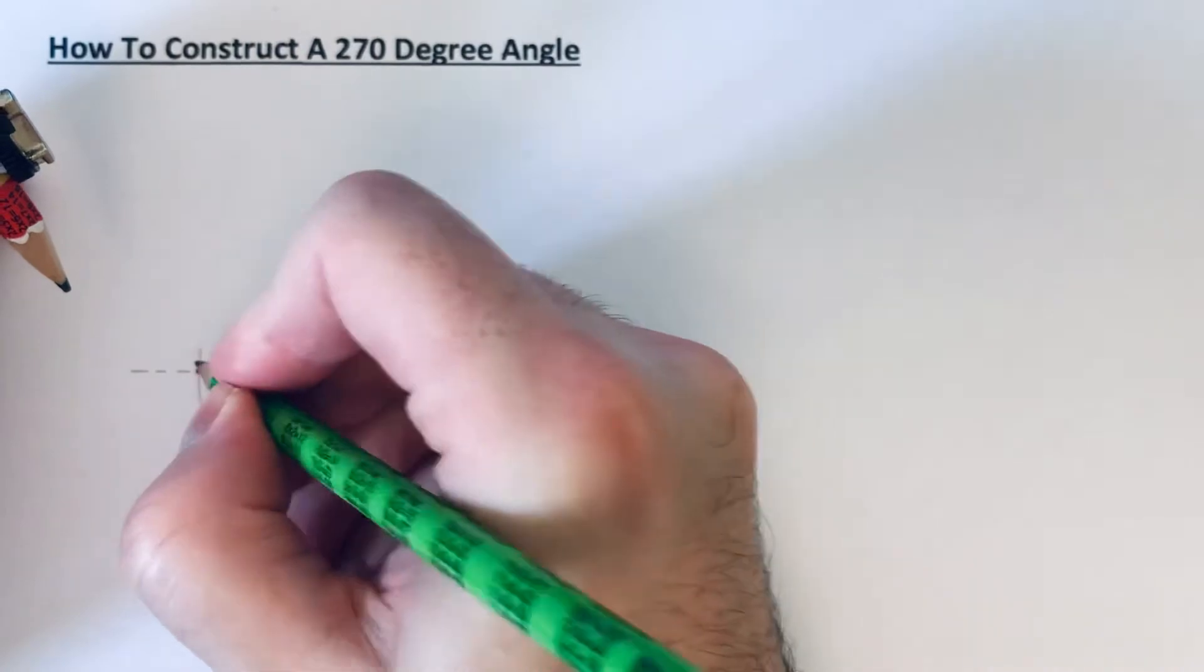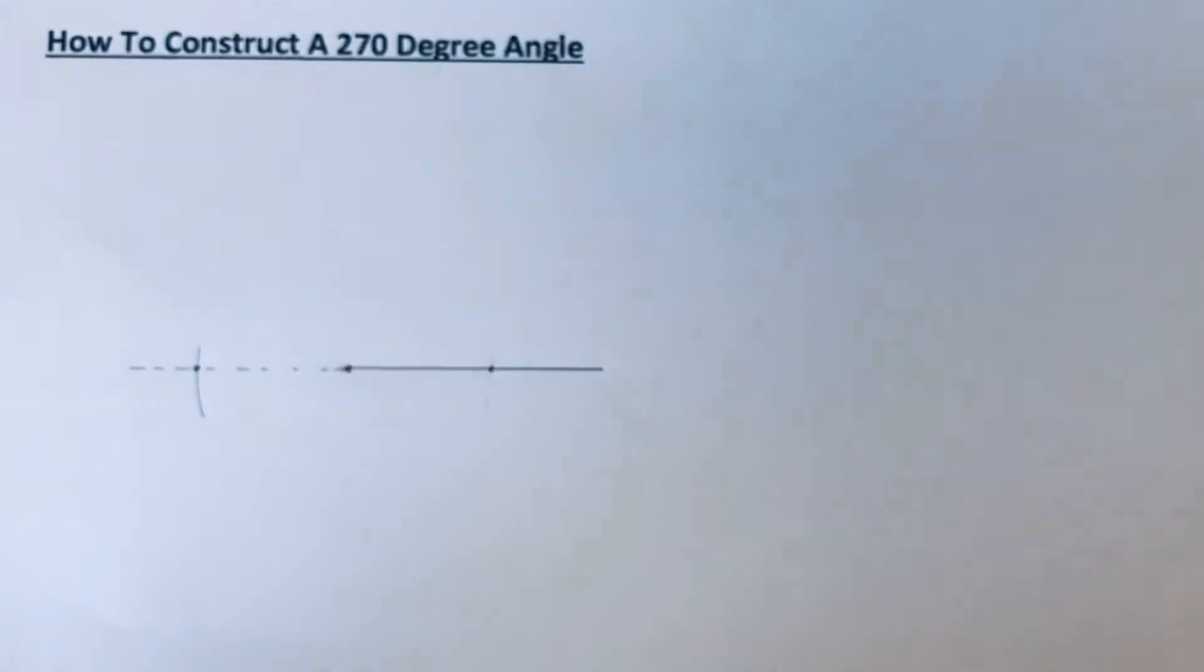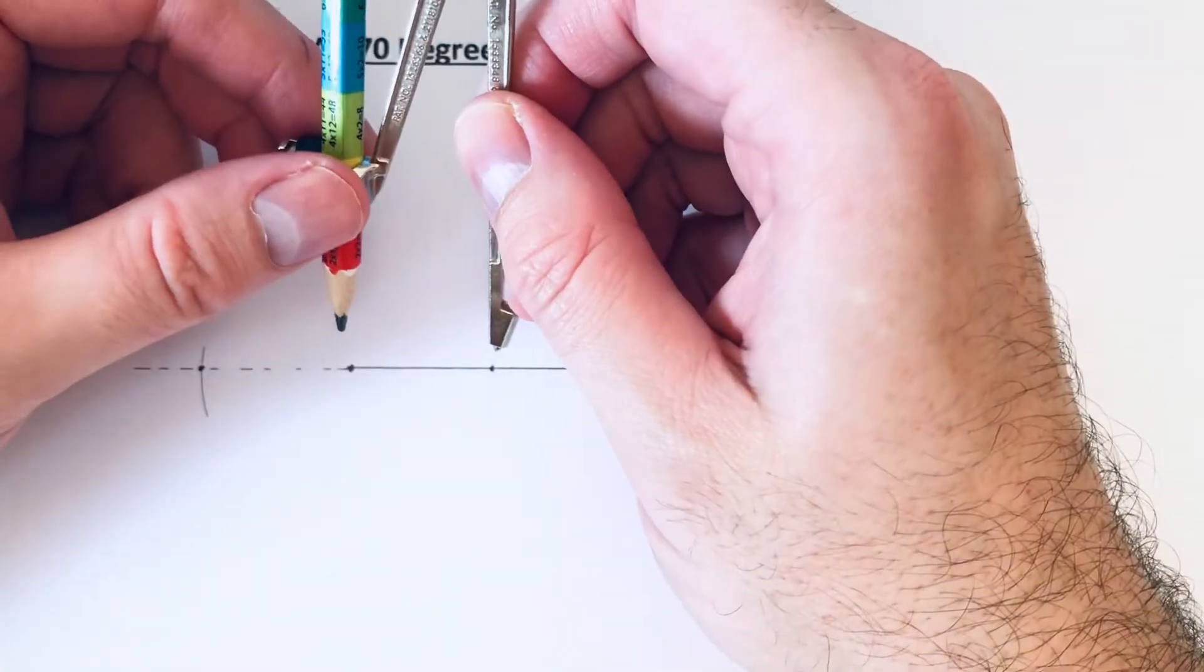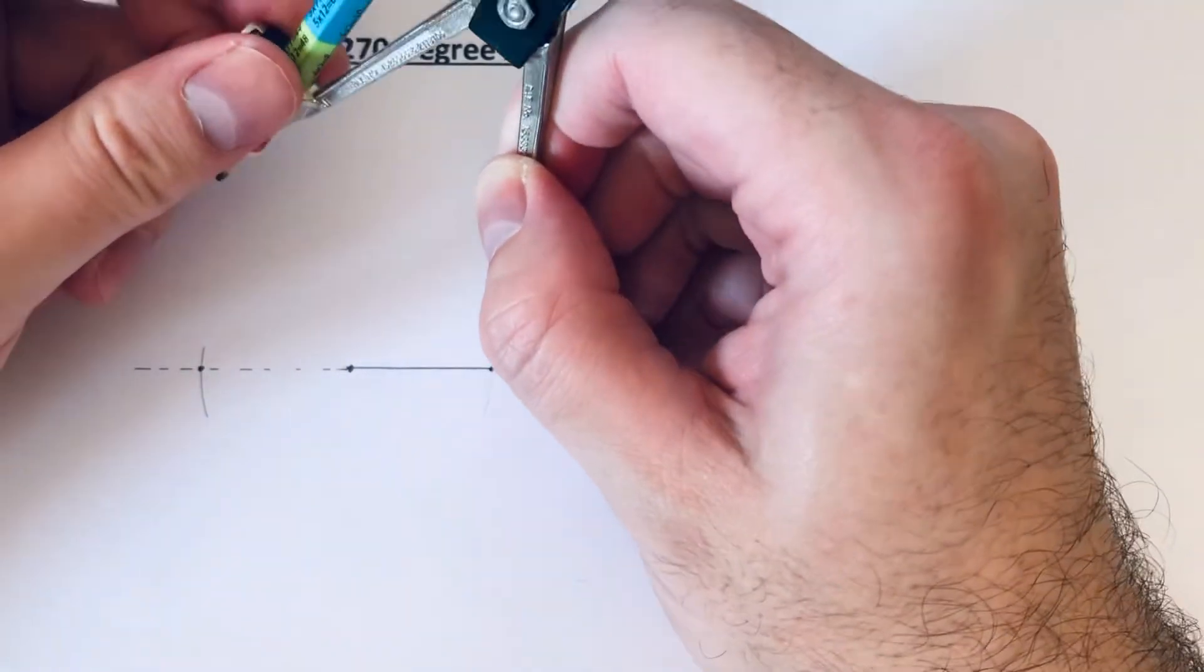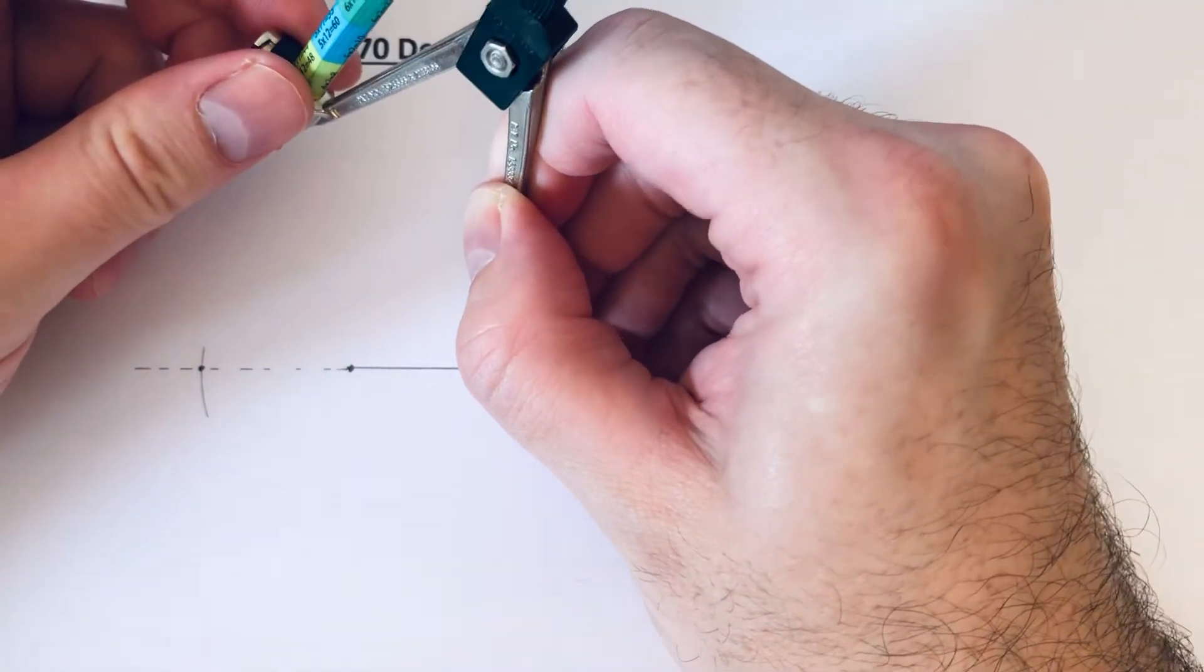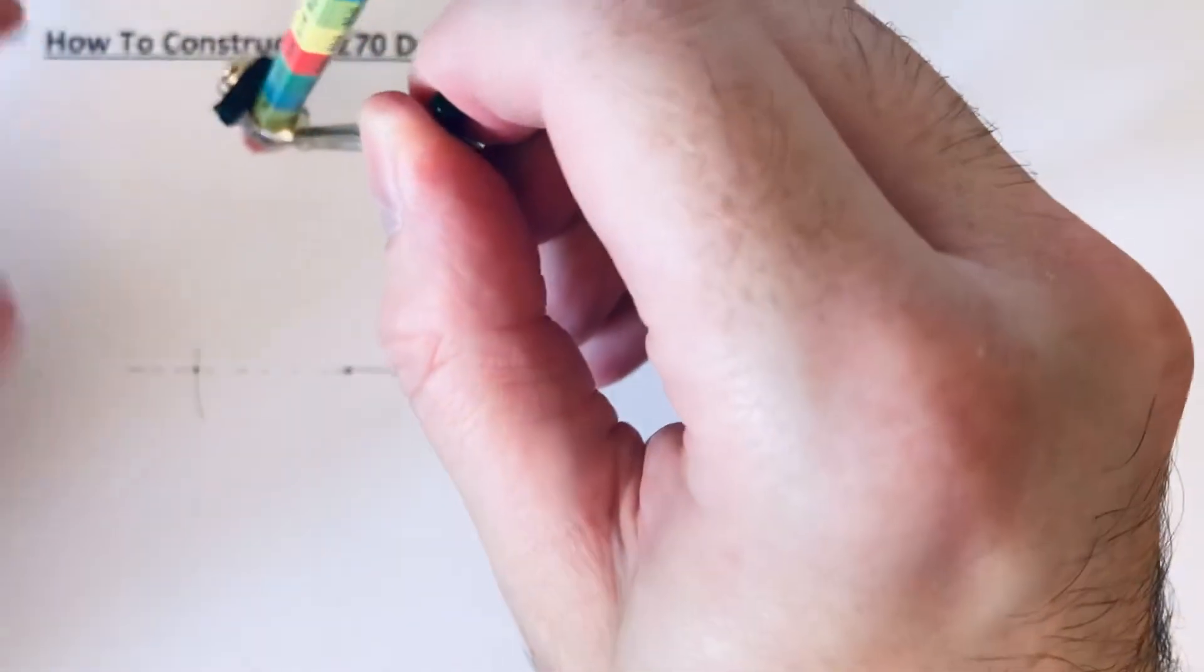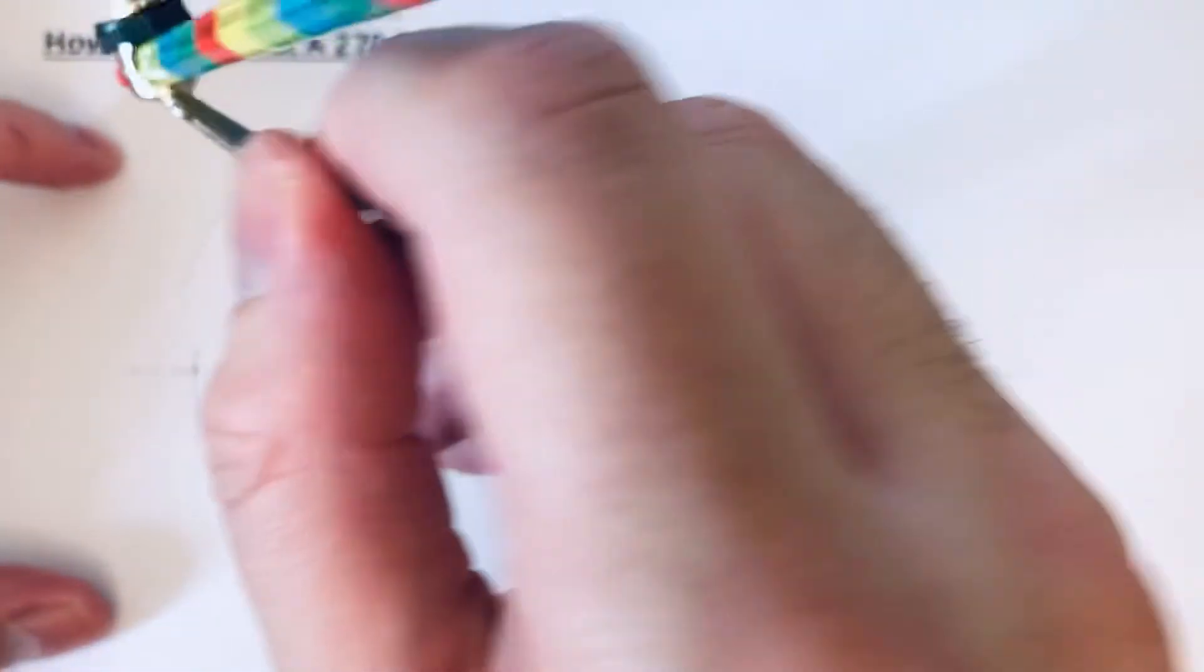You can extend your compass now, make it a little bit longer than what it was. I'm going to do two arcs above our line here, so I'm going to do an arc there, and do the same on the other side.